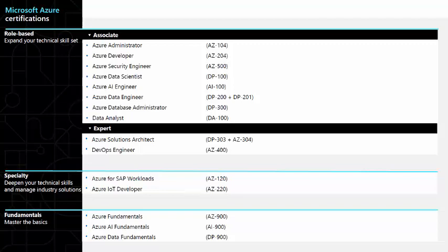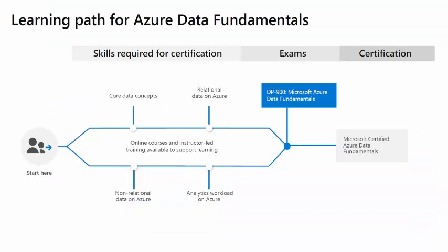DP-900 is the Microsoft Data Fundamentals exam. It consists of four major areas: relational databases, non-relational databases, analytics workloads, and core data concepts. The core data concepts are cloud-agnostic but give you a sense of what you can do from a data and AI perspective in the cloud.